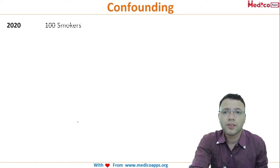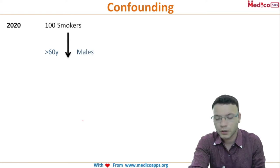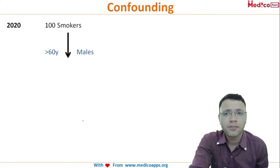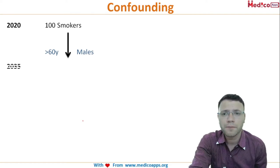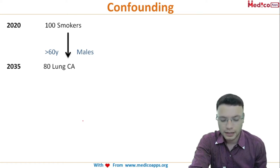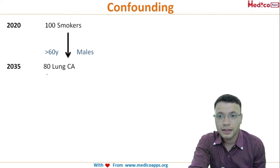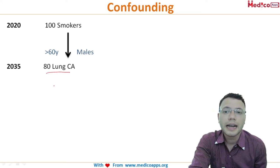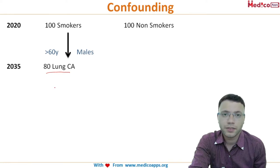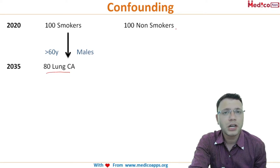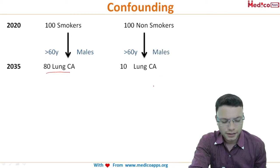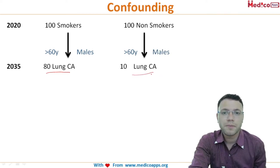Let's look at another example and learn how to reduce confounding factors. Imagine it's the year 2020 and you take a study with 100 smokers, following them up for 15 years. Among them, 80 people are affected with lung cancer. In the comparison group, you have 100 non-smokers followed for 15 years, and only 10 develop lung cancer.